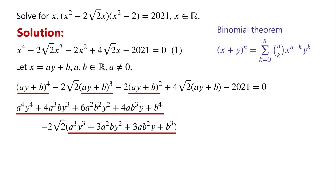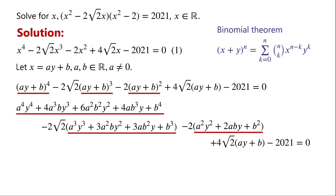(ay + b)^2 equals a²y² + 2ab·y + b². Then plus 4√2 times (ay + b) minus 2021, equals zero.